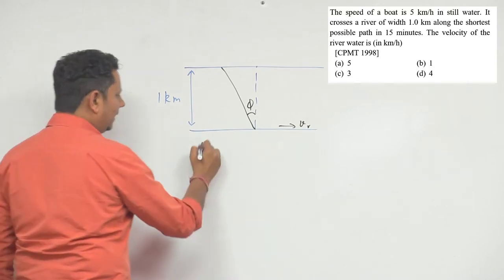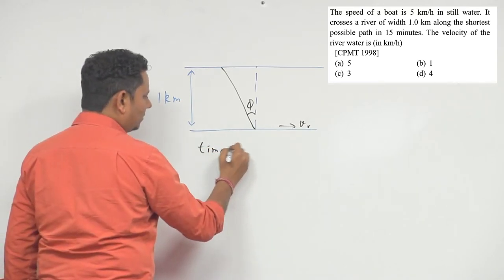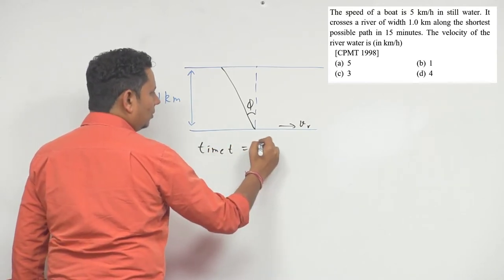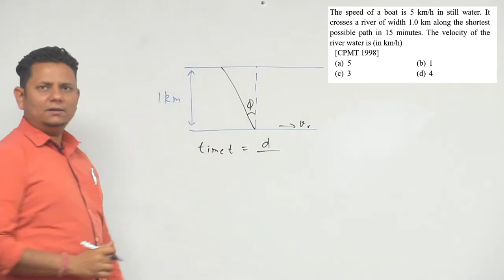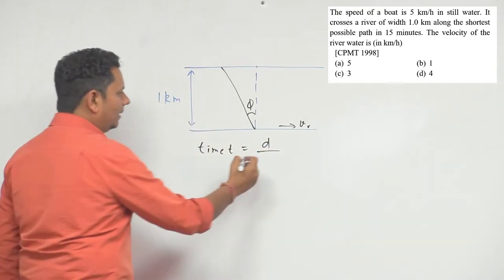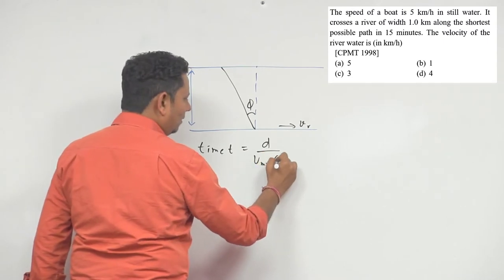We know that the time taken for the shortest path, t, can be written as distance d divided by vmr cos phi.